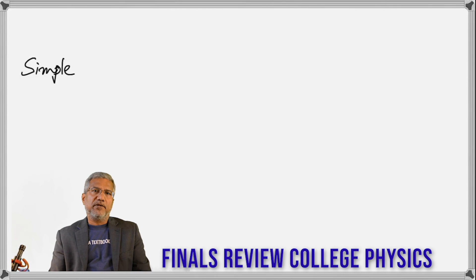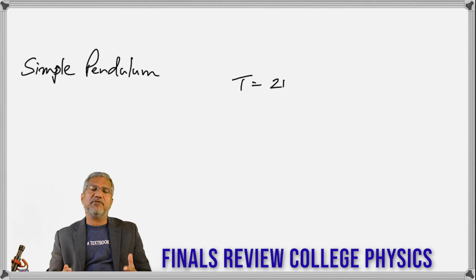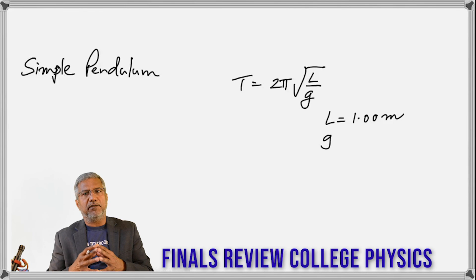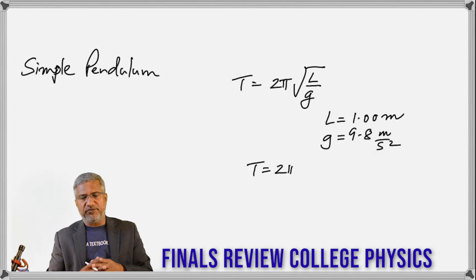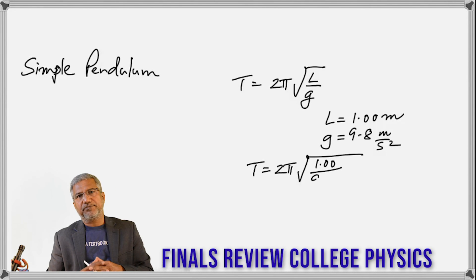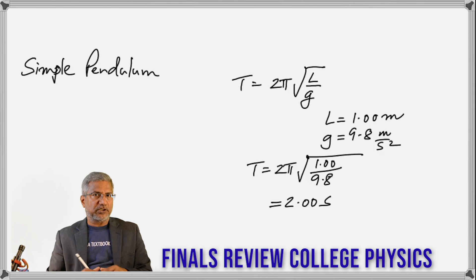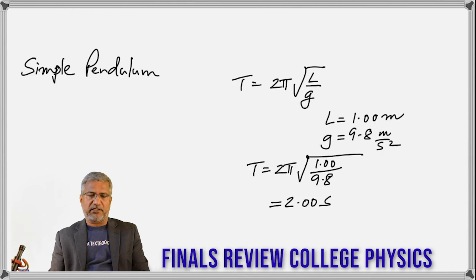For a simple pendulum — a string with a mass attached, pulled to one side — the time period is T = 2π√(L/g), depending on the length L and acceleration due to gravity g. For L = 1 m, T is very close to 2 seconds. If you take the pendulum to another planet, the time period changes because g changes — if g decreases, the time period increases.